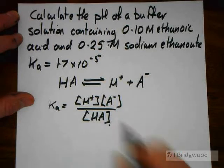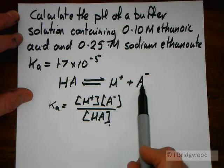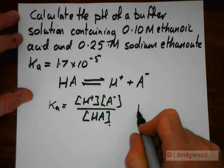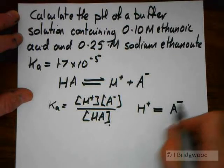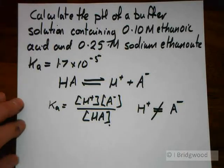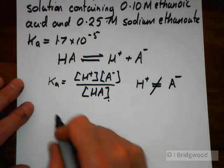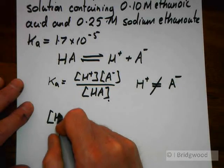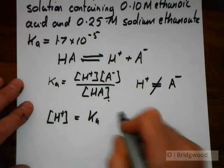But unlike a weak acid where the concentration of H plus and the concentration of A minus were the same because they were coming from the same place, now that is not so. But we can still rearrange our equation to work out the concentration of hydrogen ions: [H+] = Ka [HA] / [A-].